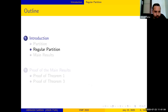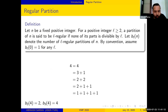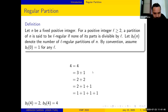Next we move on to regular partitions as mentioned in the title. For a fixed positive integer l, we call a partition of n to be l-regular if none of its parts is divisible by l — parts means the components once you write a partition. Let b_l(n) denote the number of l-regular partitions of n. By convention, b_l(0) = 1. Going back to the example of four, the second and last partitions are 2-regular, and all except the second are 3-regular partitions of four. So b_2(4) = 2 and b_3(4) = 4.